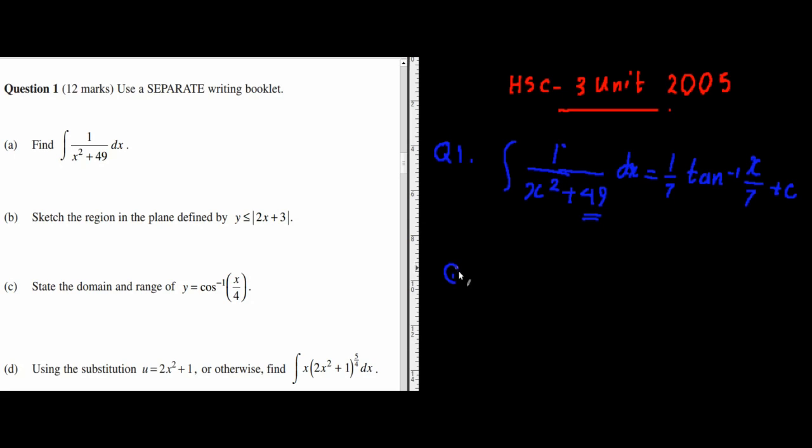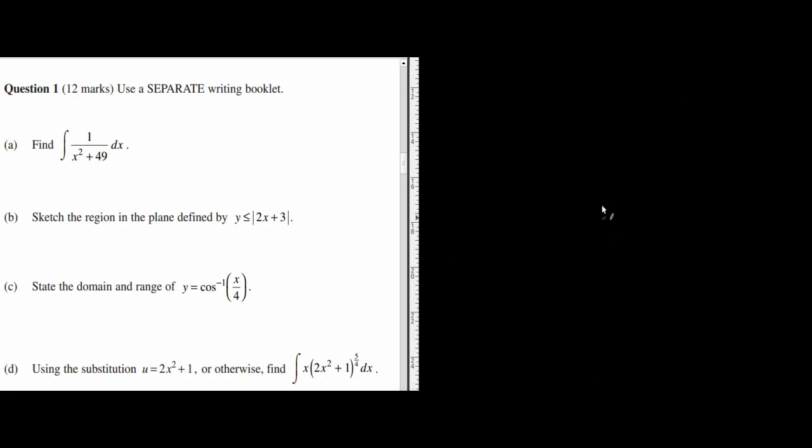Question 2 is asking you to draw an inequality. y is less than or equal to absolute value of 2x plus 3. Let me draw the axes. Whenever you're drawing absolute value of 2x plus 3, or absolute value of anything, just ignore the absolute value sign and just draw it initially. So I'm drawing 2x plus 3, ignoring the fact that it's an inequality as well.